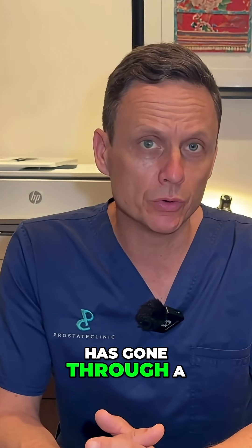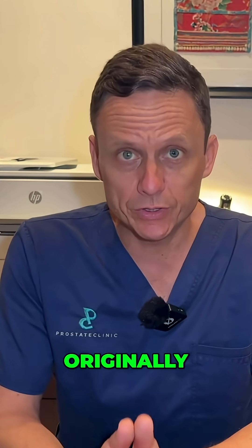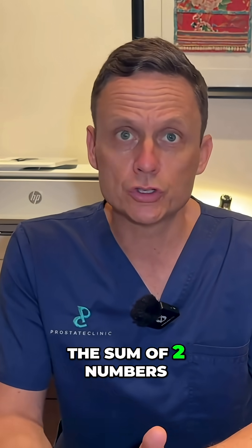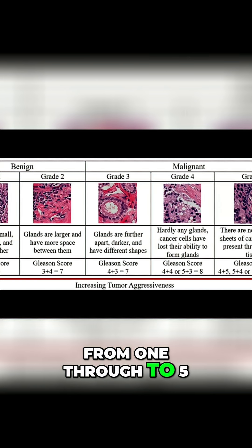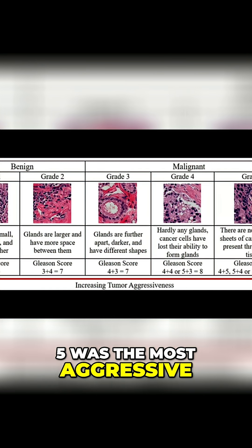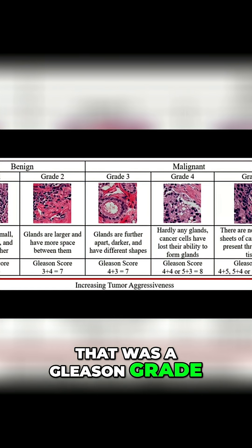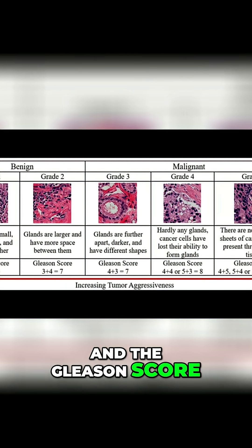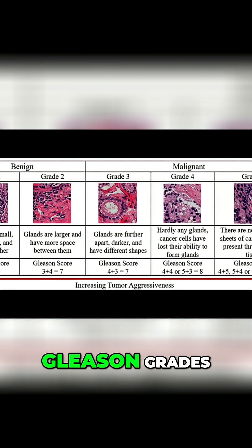It's important to know that the Gleason score has gone through a huge amount of evolution over the last two or three decades. Originally the Gleason score was the sum of two numbers and those numbers ranged from one through to five. One was the least aggressive, five was the most aggressive. That was a Gleason grade, and the Gleason score is the sum of the two most predominant Gleason grades.